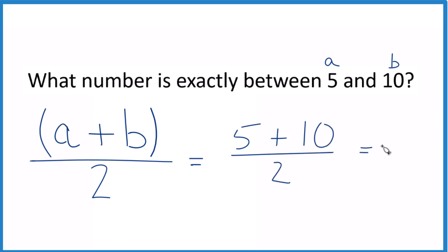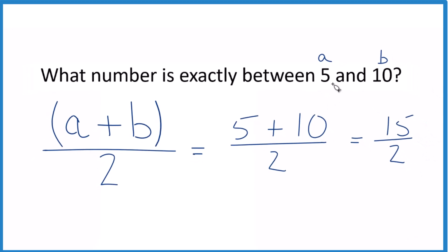5 plus 10 equals 15, and we divide 15 by 2. So 15 over 2, that's exactly between 5 and 10.